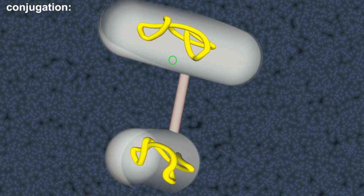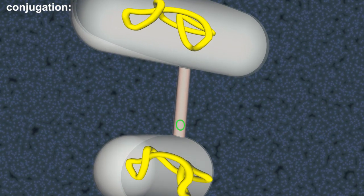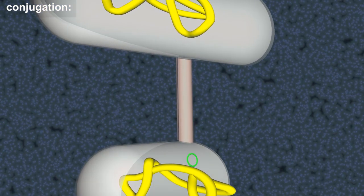A genetic element, known as a plasmid, is then passed through the pilus from the donor cell to the recipient.